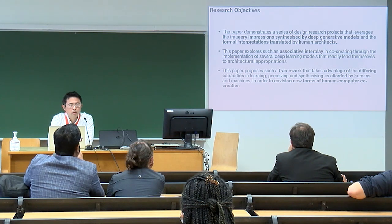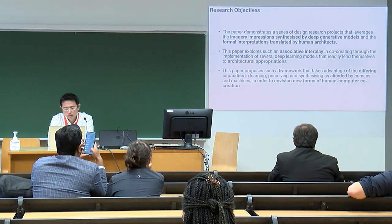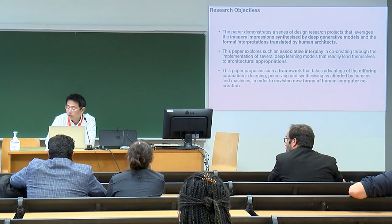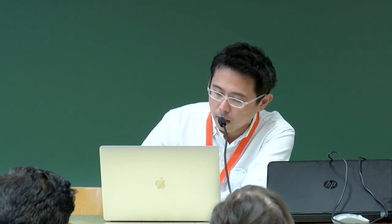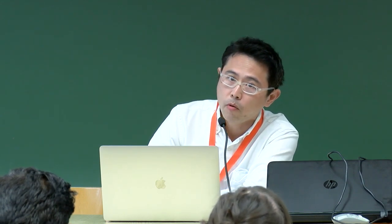The objective here is that in the presentation you will see a series of design research projects that leverage the imagery impressions synthesized by deep generative neural networks, and the formal interpretation by humans, to translate these imagery into architectural artifacts. This paper explores this associative interplay and proposes a framework to take advantage of the different capacities in learning, perceiving, and synthesizing as afforded by both humans and machines — in a way distributing the labor within the design process.